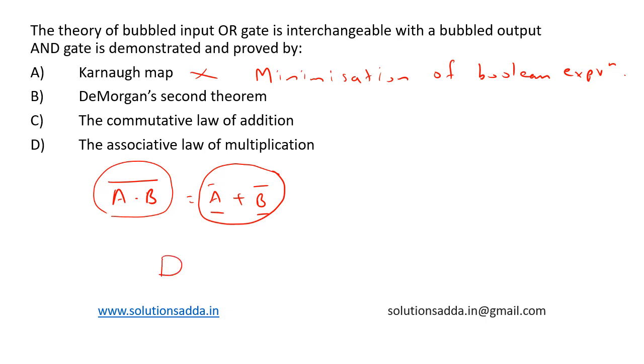This is A and this is B. This is equivalent to A bar and B bar. So this is A bar plus B bar. This is what the statement says, and commutative law of addition...